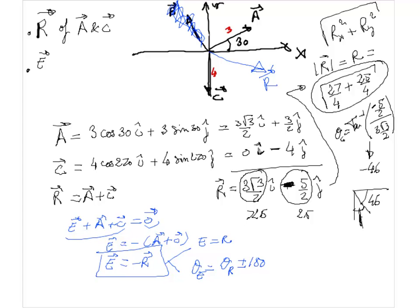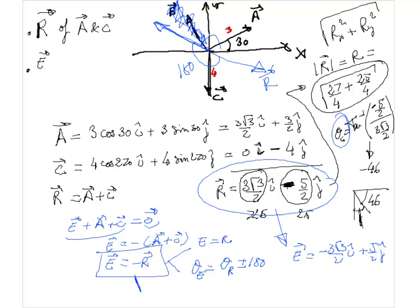This mathematically tells me two things, that the magnitude of E is equal to the magnitude of R, and that the direction of E is equal to the direction of R plus or minus 180 degrees. So by using this, I can just save time, not having to recalculate A and C like I just did, but just use the results. I can just grab R, change all the signs, and E would be minus 3 square root of 3 over 2 î plus 5 half ĵ.